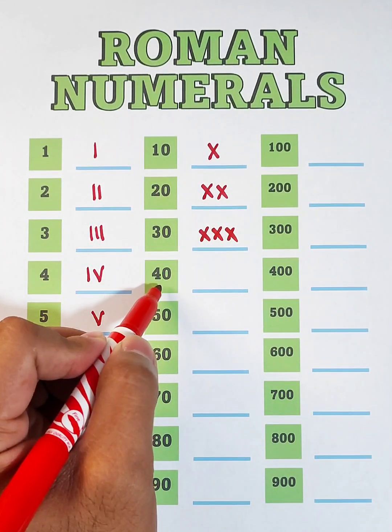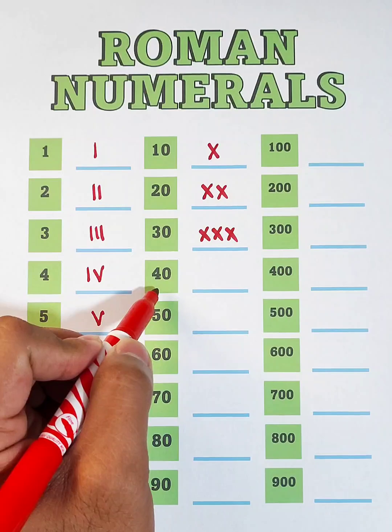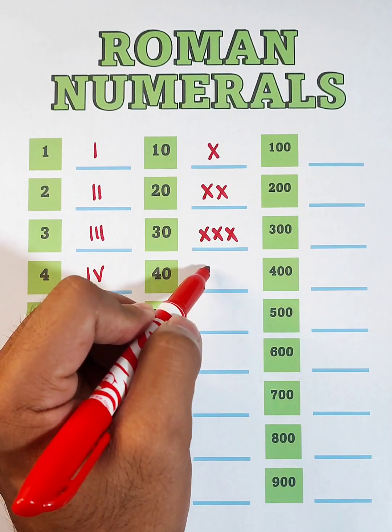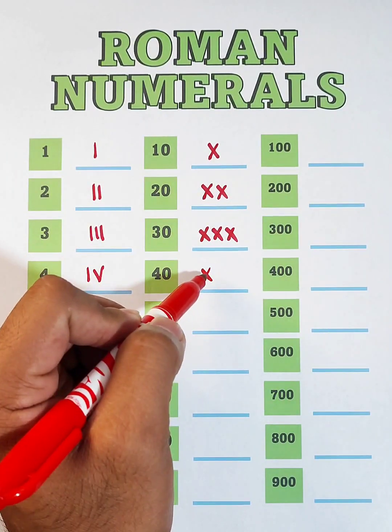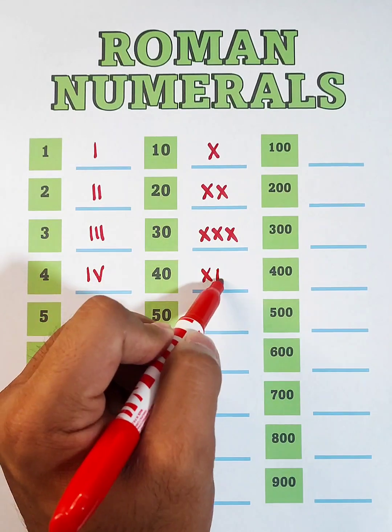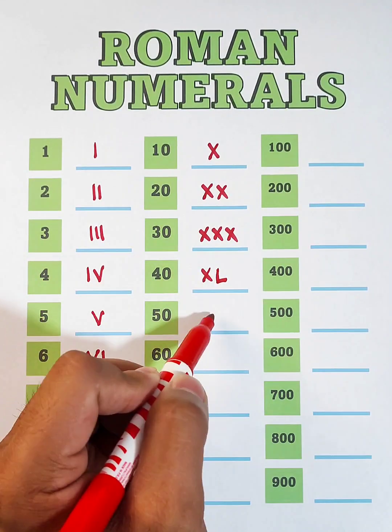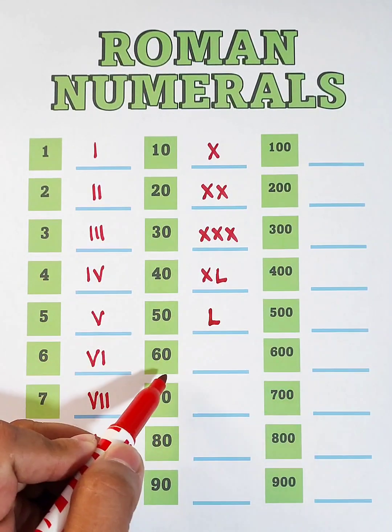Now, for 40, this would be 10 before 50. That would be X and letter L. This 50 is definitely represented by letter L.